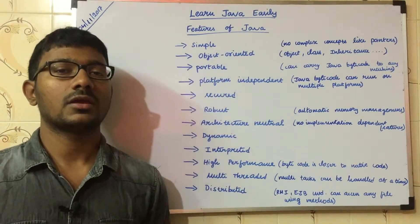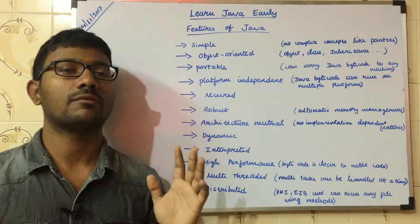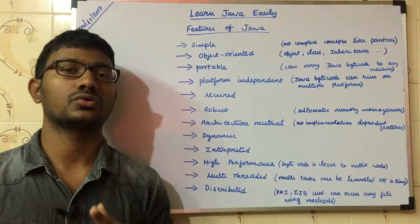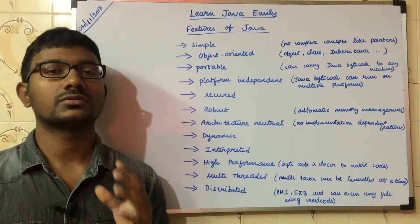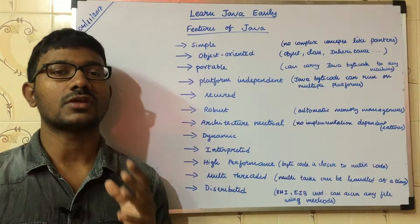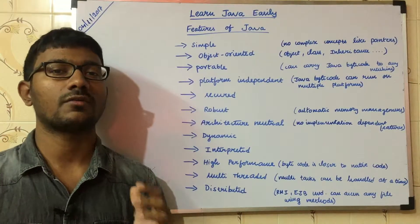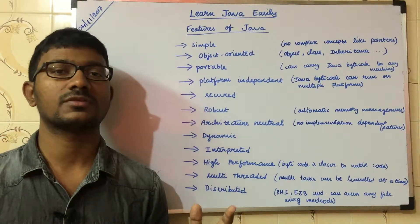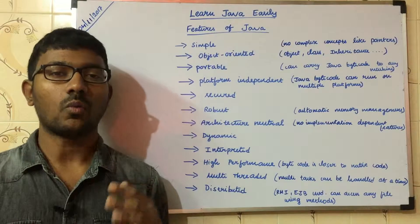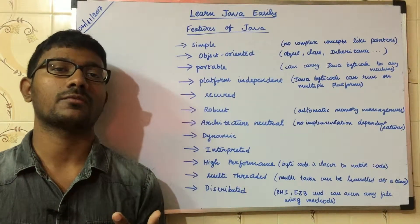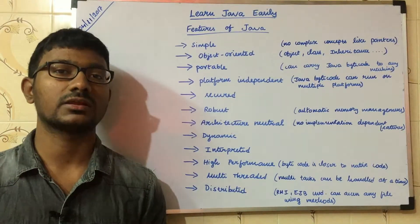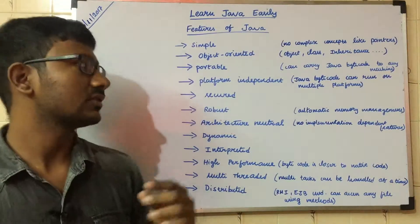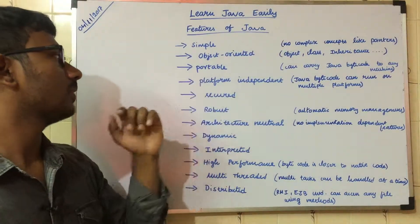And then portable. The .java file is converted to a .class file, and the .class file is in Java bytecode. Java bytecode can be easily transferred from one machine to another machine, and from one platform to another, like different physical devices. That's why Java is very portable.